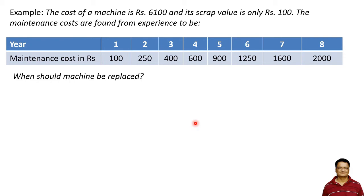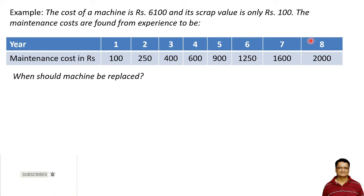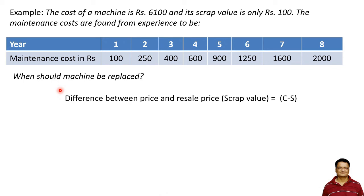Here is an example. The cost of a machine is rupees 6100 and its scrap value is only rupees 100. The maintenance costs found from experience are given in a table showing maintenance costs in rupees for eight years. You can see that the maintenance cost is increasing from the first year to the last year. The question is: when should the machine be replaced?